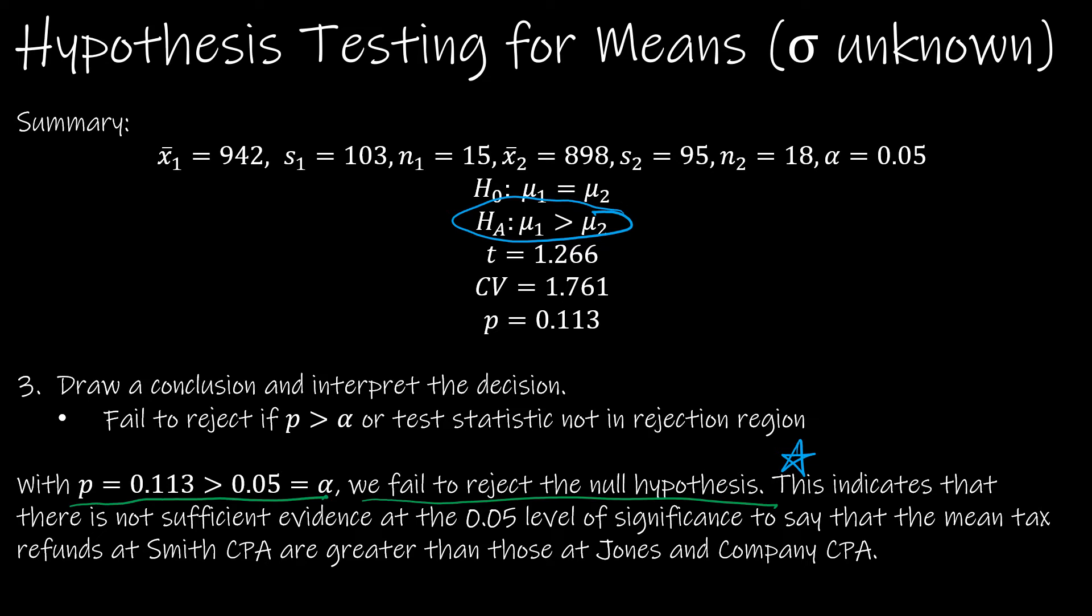This indicates there is not sufficient evidence that the alternative is true. So this indicates there's not sufficient evidence at 0.05 level of significance to say the mean tax refunds at Smith CPA are greater than those at Jones and Company. And that's what our alternative hypothesis was.